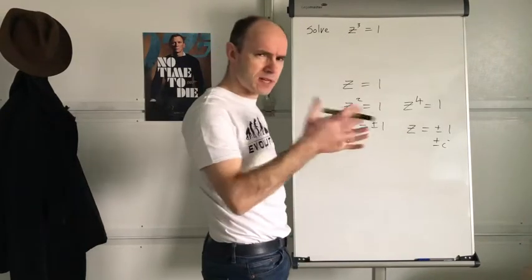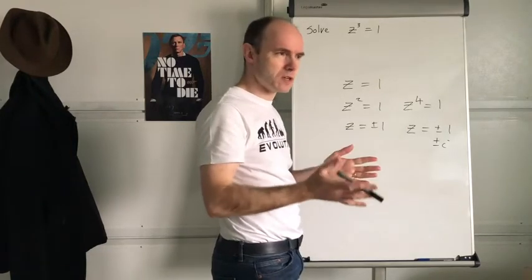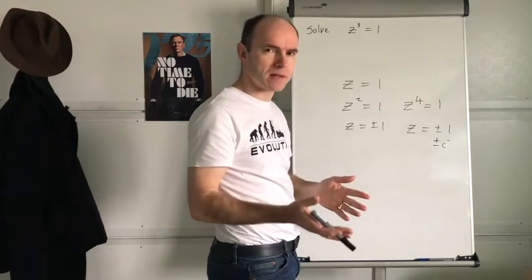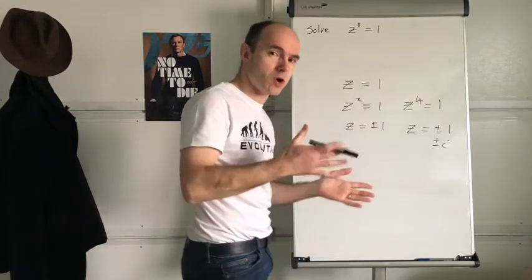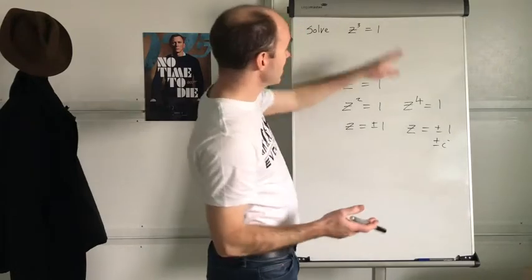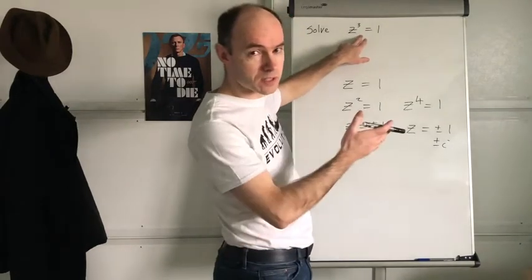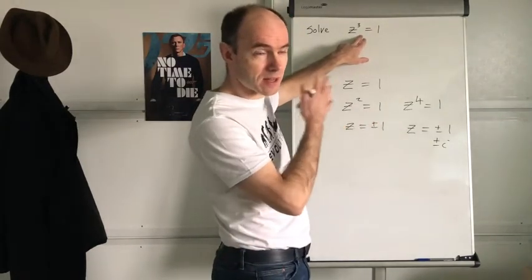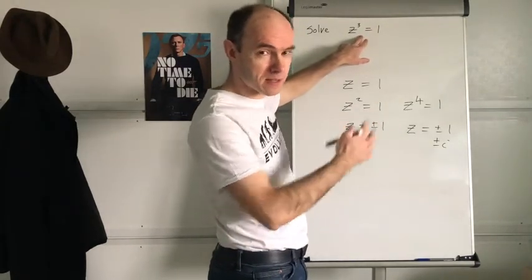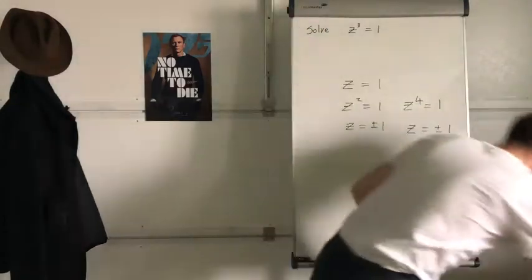Remember what I said a few videos ago? Whenever there's one solution that's complex, the conjugate will also be a solution. There's a complex solution to that, and they come in conjugate pairs. We've just got to find out what it is.